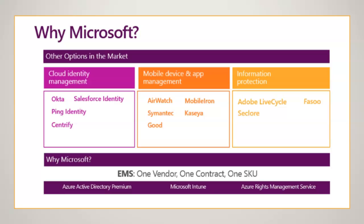There are also different products like Symantec, Casper, and JAMF — these are different products from the mobile device management space. For information protection, again Adobe Lifecycle, Fasoo, and Seclore are different companies available for information protection, or the products you have in the on-premises environment.